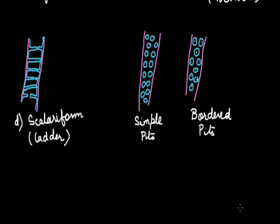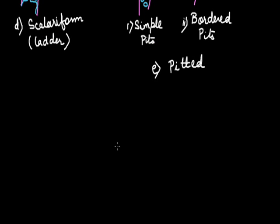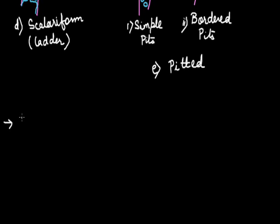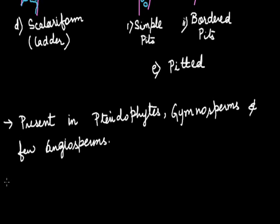Now where these tracheids are present. These tracheids are mainly present in the pteridophytes, gymnosperms and few angiosperms. When coming to their function, their basic function or primary function is conduction. But they also provide mechanical support.